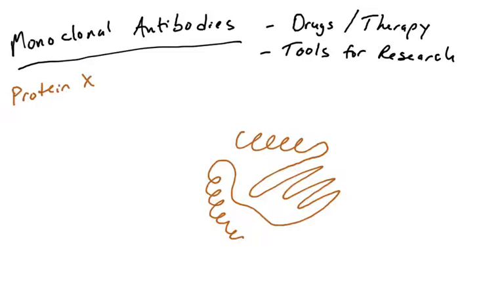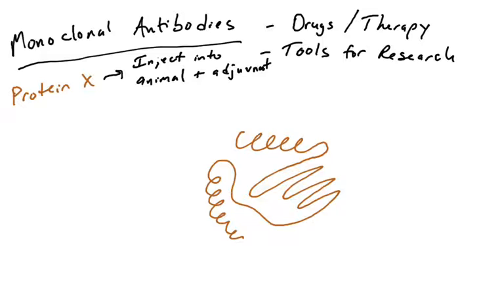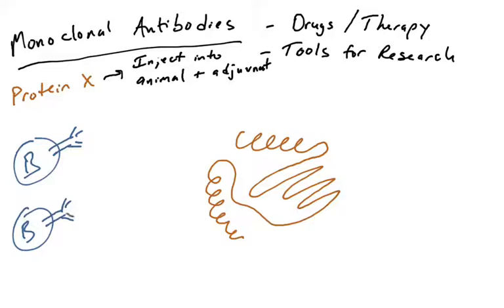Here's protein X — you can see it's got two alpha helices and a beta sheet. What can be done is the protein can be injected into an animal, such as a mouse, rat, or rabbit — three common animals used to generate antibodies. The protein is not necessarily immunogenic; it's not a pathogen. So to get an immune response, you usually have to include an adjuvant, something that stimulates an immune response. Injecting protein plus adjuvant into these animals will hopefully generate an immune response.